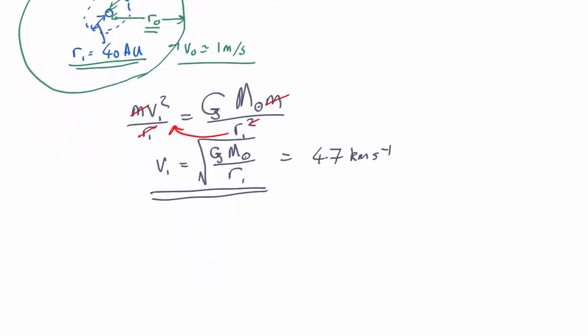So the angular momentum initially is equal to m r0 v0. And finally, which is going to be the same thing, is equal to m r1 v1. So once again, the mass of the ice worlds cancels out. We don't need to know how heavy they are. And we find that r0 over r1 equals v1 over v0.